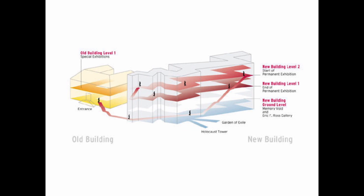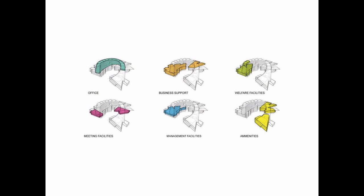You might have something like this: old building versus new building, with new regions in red, old exhibits in yellow, and blue for public entry space. You're color coding different parts of the building. Maybe a building has office space, business support, welfare services, meeting facilities — you're identifying parts and coloring them so that at a quick glance we understand what these various pieces are and how they assemble to make the whole building.